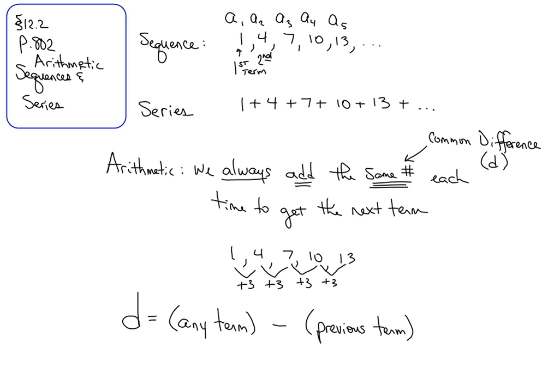Now what if you're adding each time but you're not adding the same number? Is that arithmetic? No. So if you're adding one the first time and then two the second time and then three the third time, yes, you are adding. Maybe we could come up with a rule for that sequence or that series, but it's not called arithmetic because we're not adding the same exact number every single time. It has to be the same number if it's going to be arithmetic. Any questions on any of that?